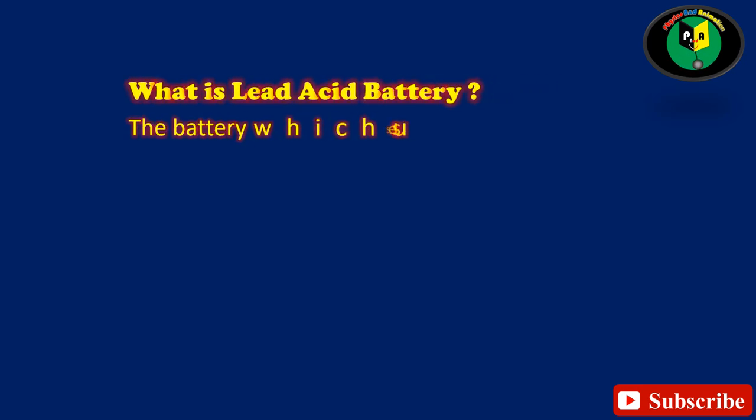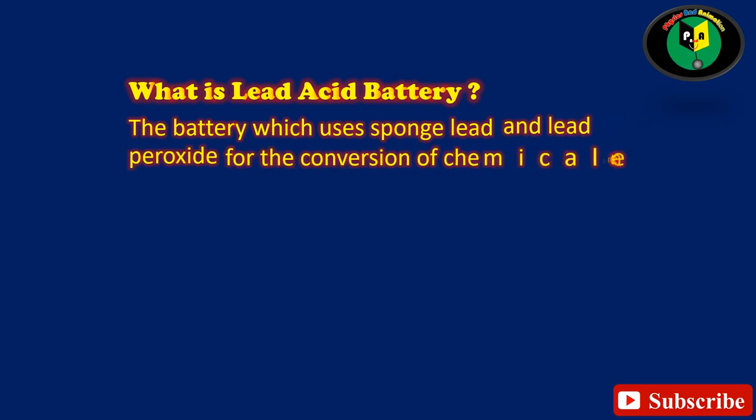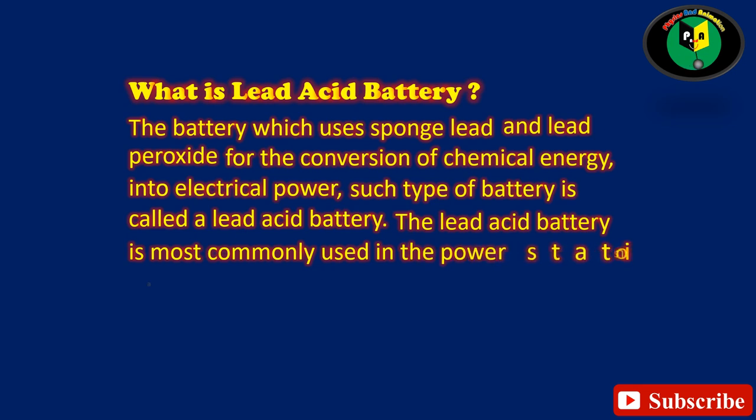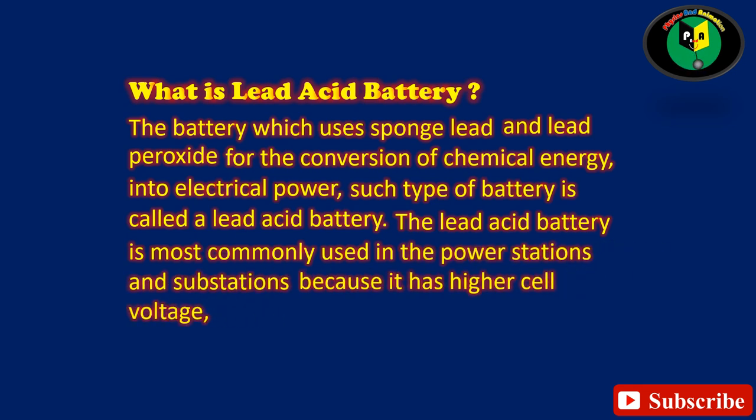The battery which uses sponge lead and lead peroxide for the conversion of chemical energy into electrical power. Such type of battery is called a lead acid battery. The lead acid battery is most commonly used in the power stations and substations because it has higher cell voltage and lower cost.